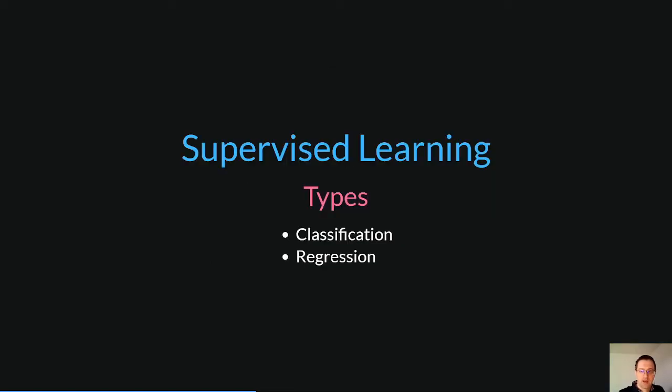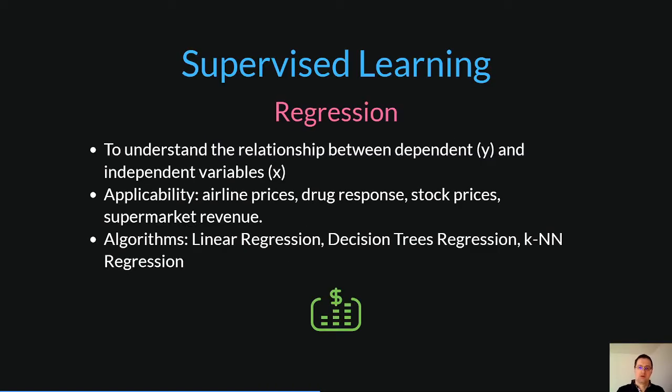Supervised learning can be separated into two types: classification and regression. Regression is used to understand the relationship between dependent and independent variables. It is commonly used to make projections such as for flight ticket calculation, stock prices, and sales revenue.